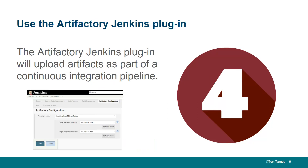That brings us to the fourth option, which is to use an Artifactory plugin that goes into a continuous integration tool like Jenkins. You can install the Jenkins Artifactory plugin quite easily through the Jenkins Administrative Console. When you do that, you quickly configure it as a system resource inside of Jenkins, and then as soon as you do a build, you can just point to your Artifactory repository and point to the release and snapshot repositories that you can push to. When your Jenkins build job completes, if everything runs successfully, the jar file, zip file, or whatever artifact you create will automatically get uploaded to Artifactory.